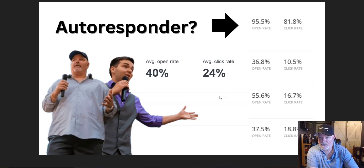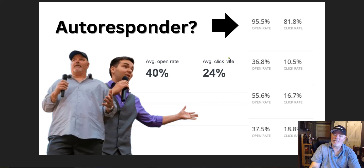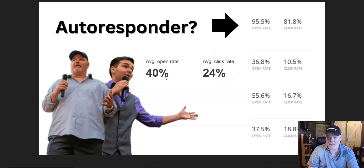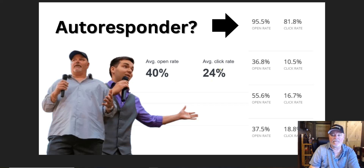When people opt in to get more information about our business, or we import leads into that sequence, this is the average after 30 days — the accumulation of all the emails people are going through at the end of that 30-day cycle. We'll do things to bring that up even further.